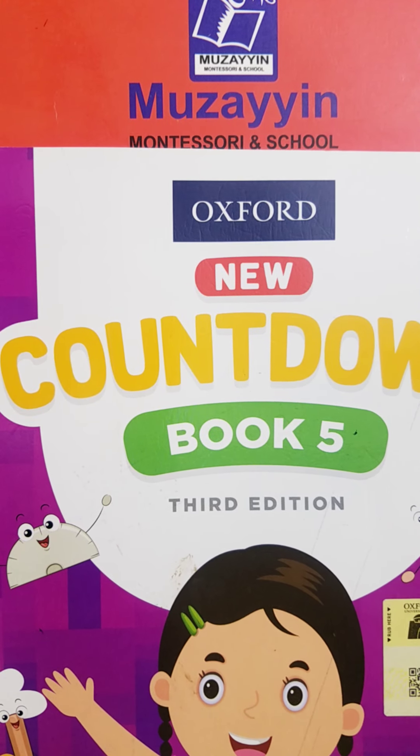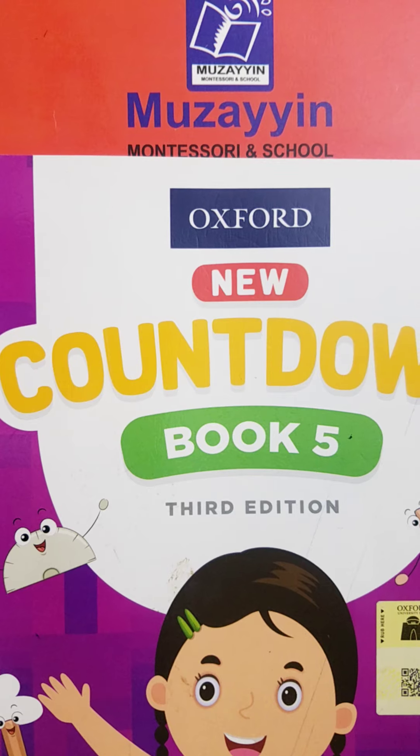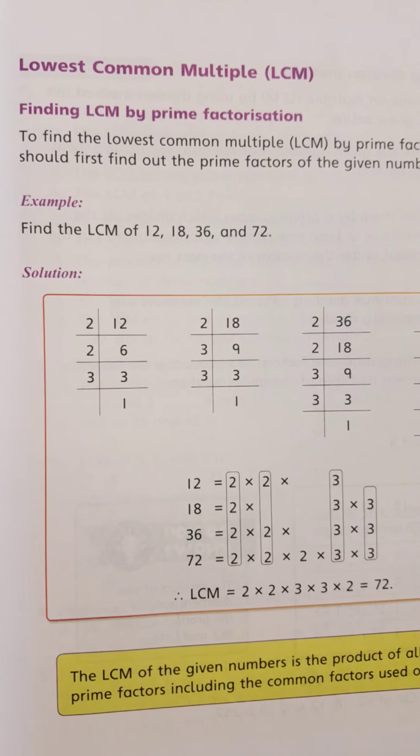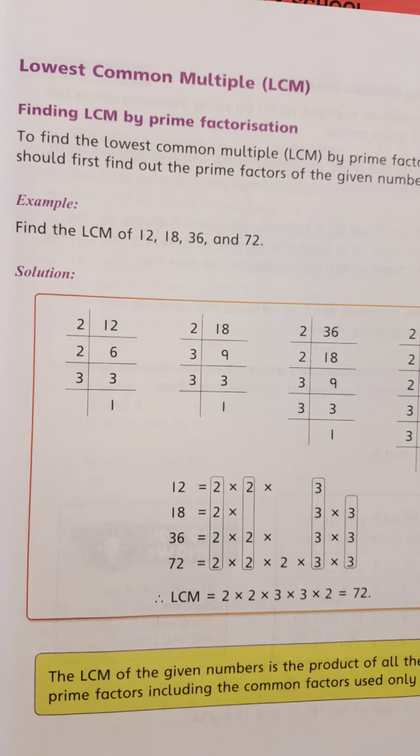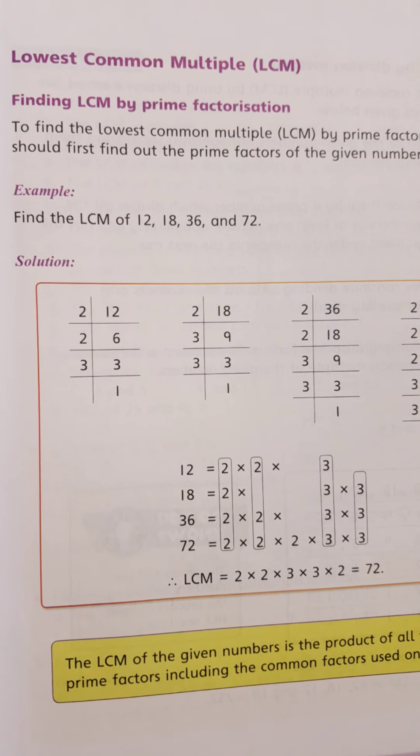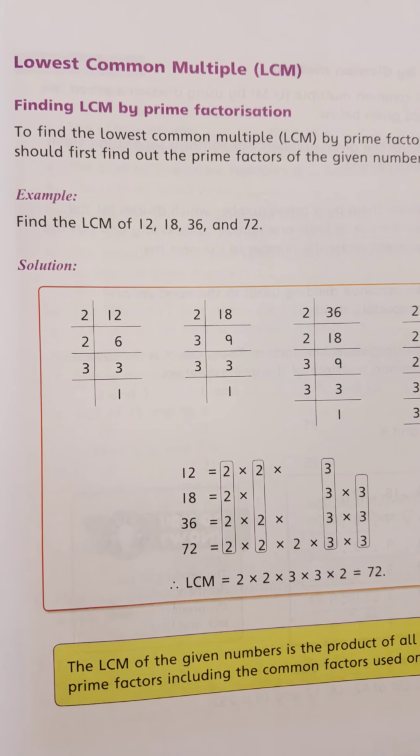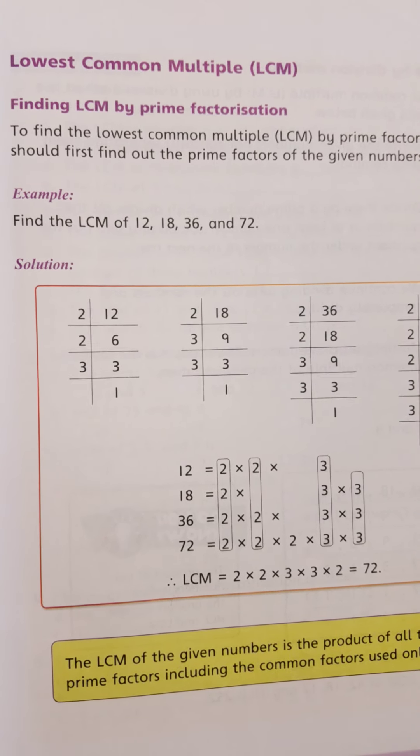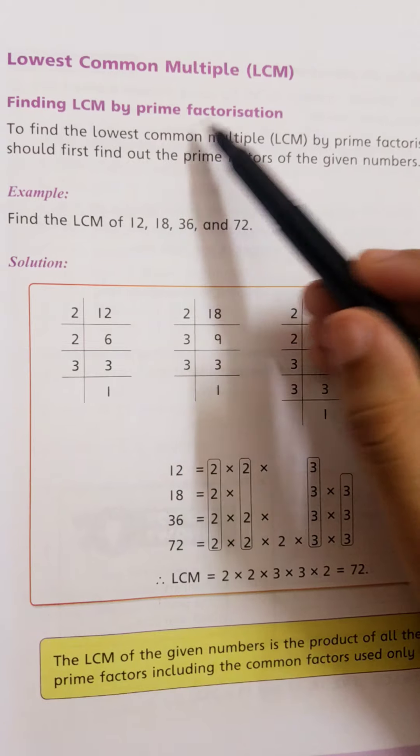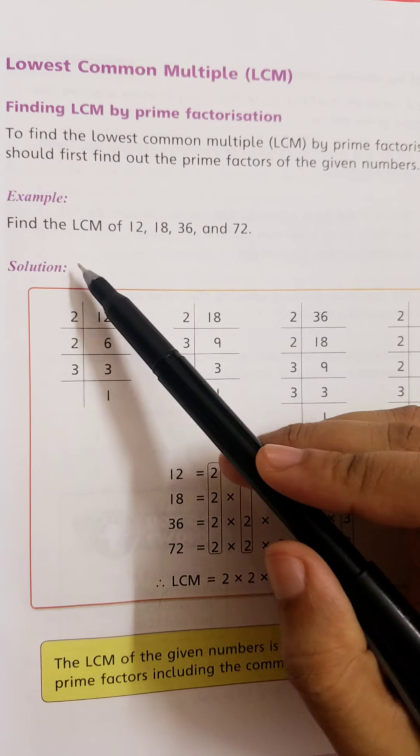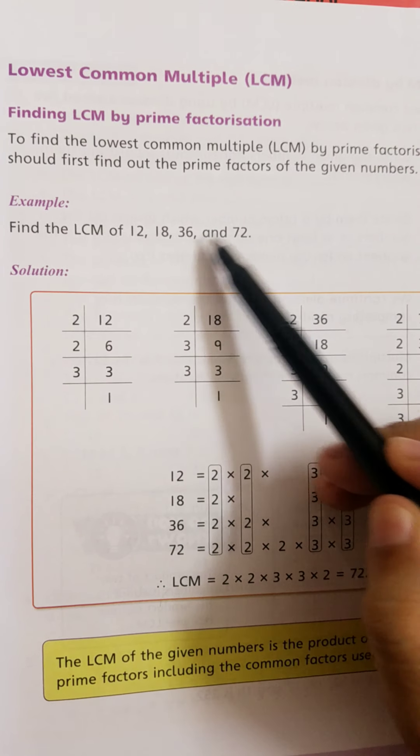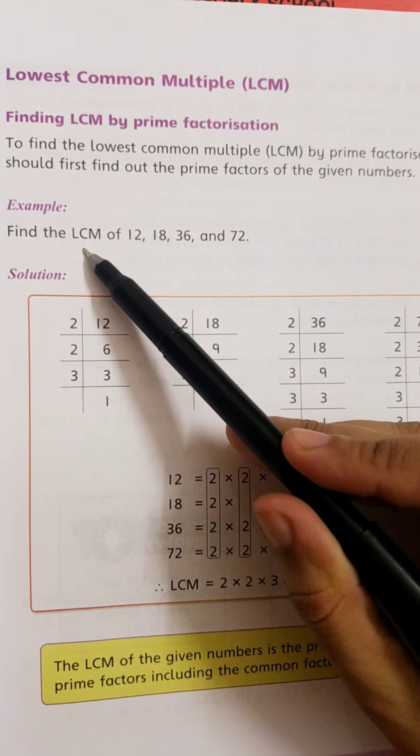Assalamu alaikum students. Today we start our work of math for grade 5. Our topic is Lowest Common Multiple, LCM. First, finding LCM by prime factorization. LCM can be found using two methods: first is prime factorization and second is division method. First we solve the prime factorization method. For example, find the LCM of 12, 18, 36, and 72. We have four numbers and need to find its lowest common multiple.